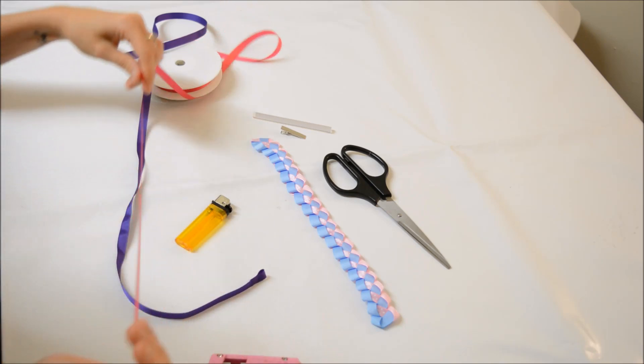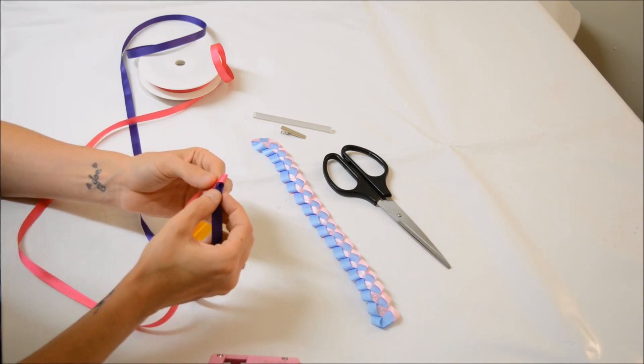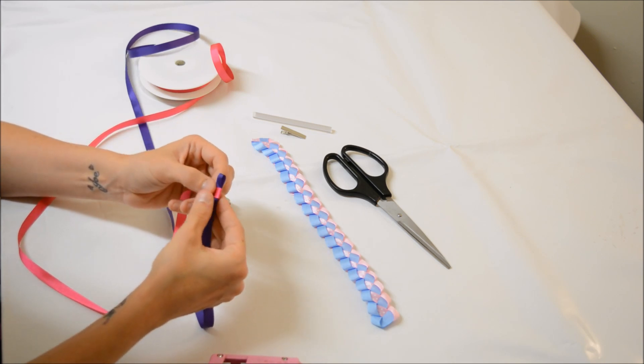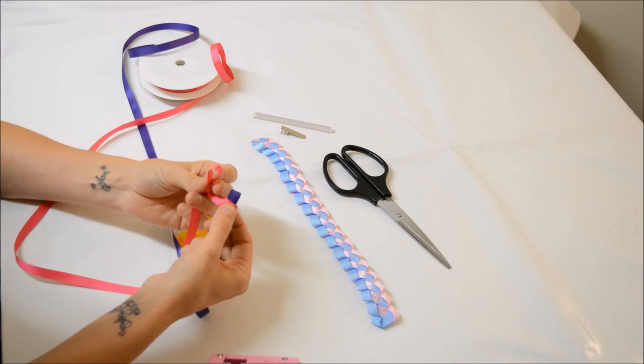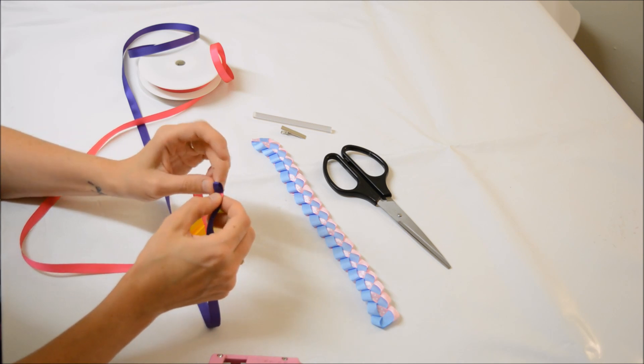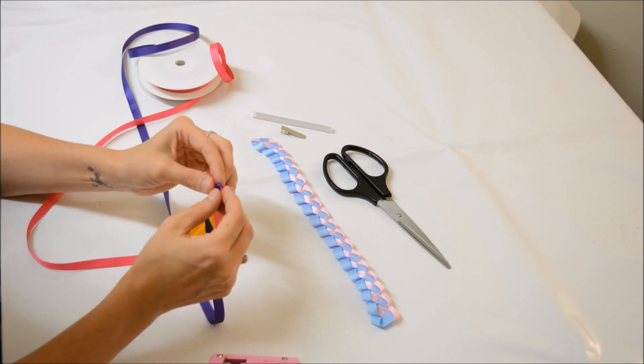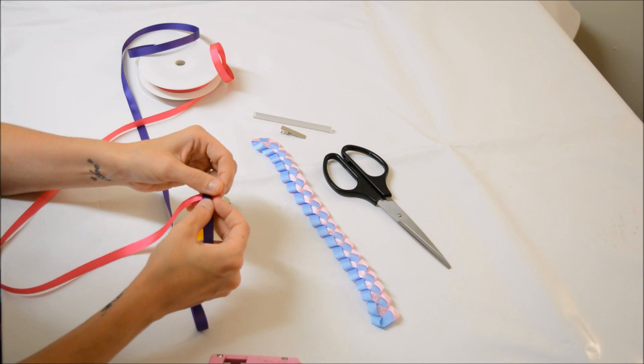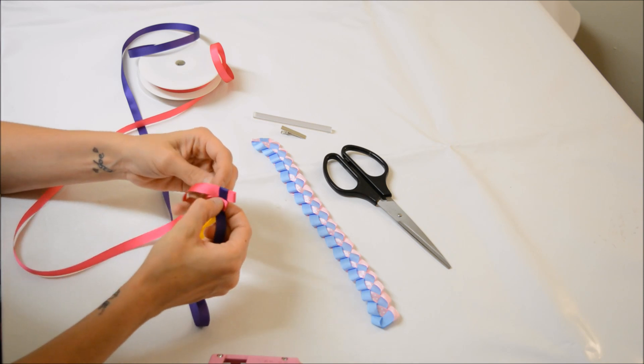Now what you want to do is take one of your ribbons and slide it through the other one. Now because I've pushed the purple one through, I'm now going to take the pink, fold it over, and push that through the loop that we made. Now you want to make sure that it's as tight as possible. It's a little bit fiddly just to get it started.